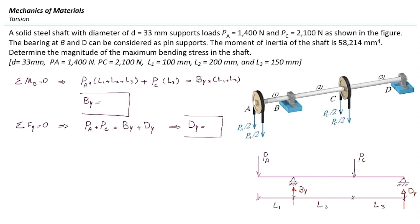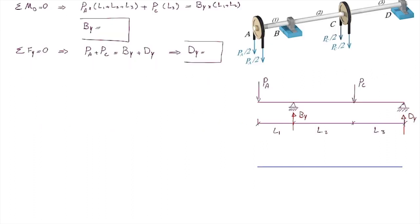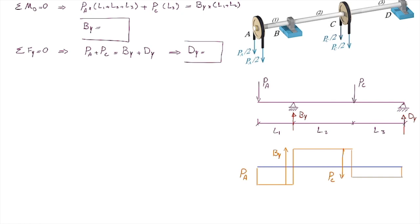After determining those reaction forces, we need to build the shear and moment diagrams. Starting from the left side, there is a force pushing the beam downward, so the initial shear force magnitude is P_A. It remains constant all the way to support B, where it jumps up by B_Y. Then it remains constant to point C, where there is another jump down equal to P_C. It remains constant to the other end and returns to zero. This gives us three distinct areas in the shear diagram: A1, A2, and A3.